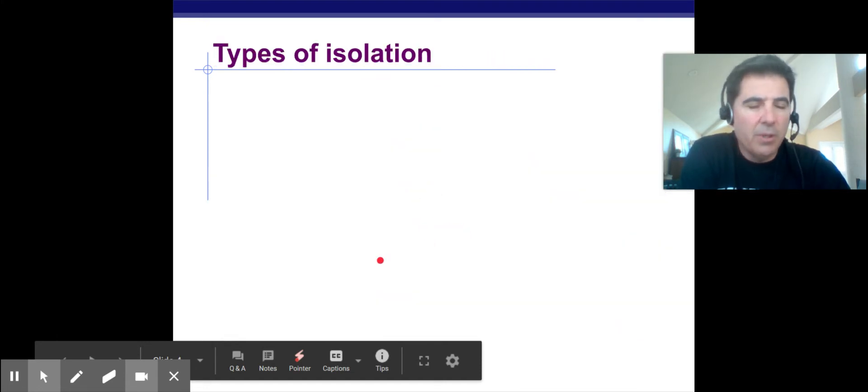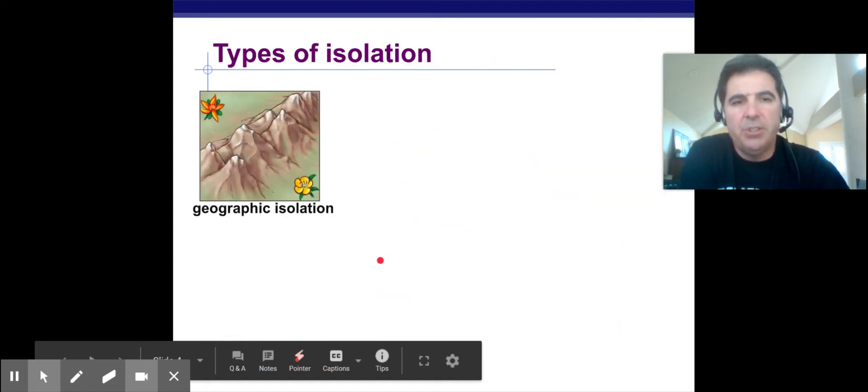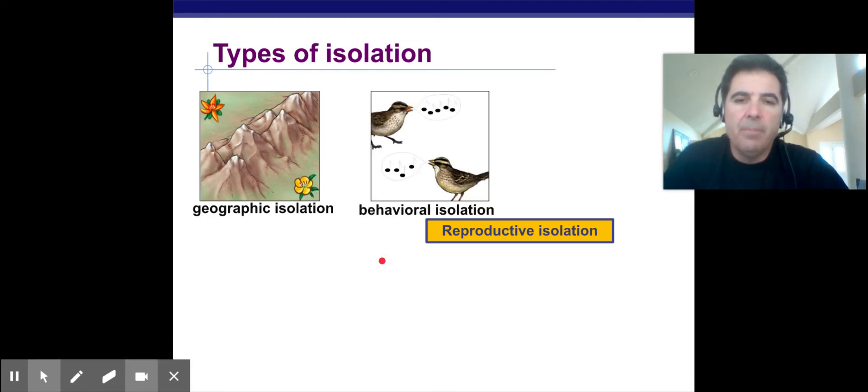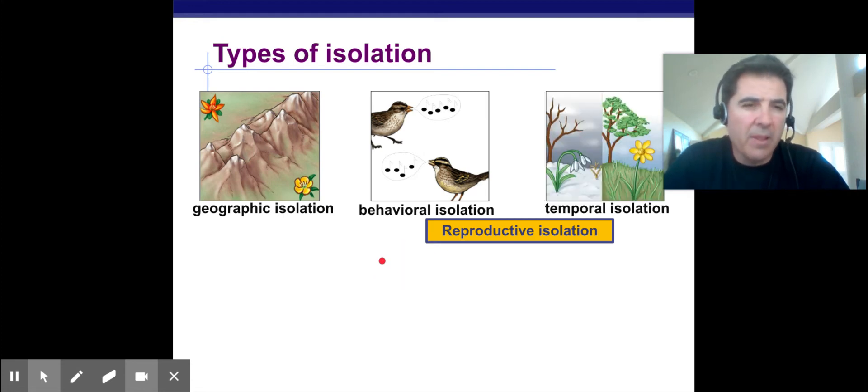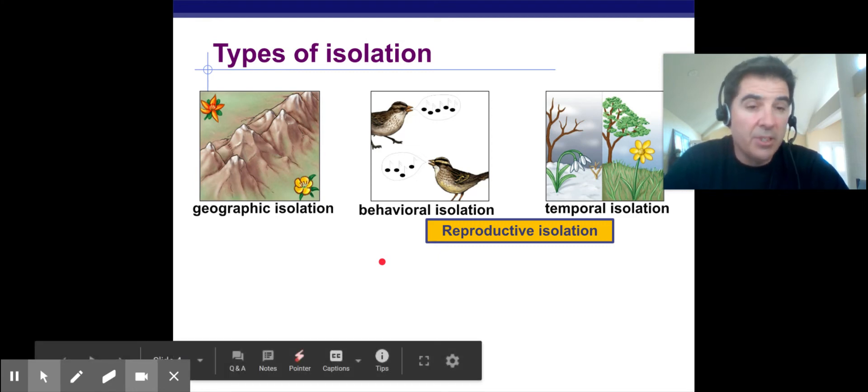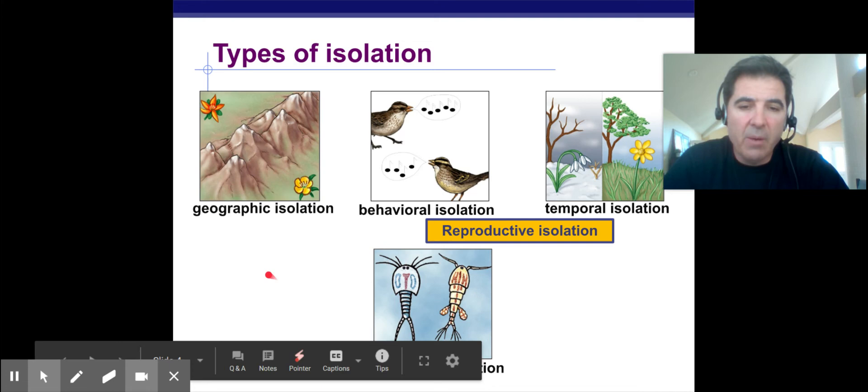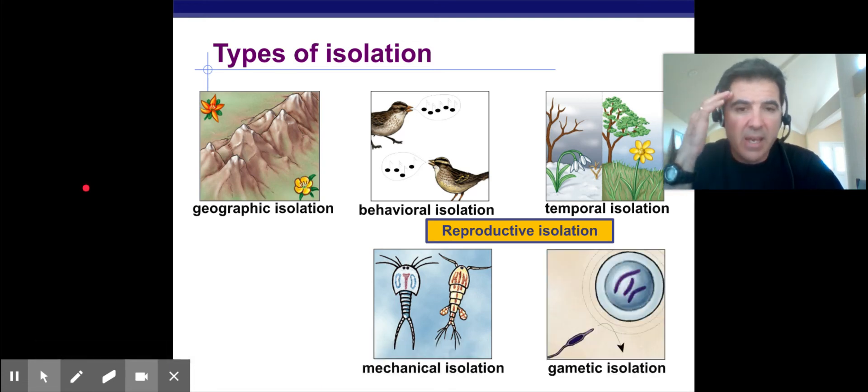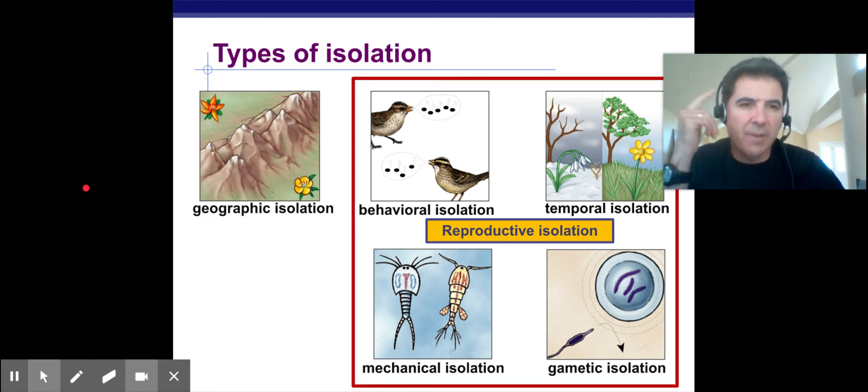So there are two types of isolation. Basically there's geographic isolation and there's reproductive isolation. Reproductive isolation, I usually say the words colors, calls, and seasons. That's the basic general way to say it. Colors, calls, and seasons. So we'll talk more about it in the next coming pages. But behavioral is how they behave, temporal is seasons, mechanical means they cannot physically mate, and then gametic, which means their gametes will mix. Those ones are all reproductive isolation.